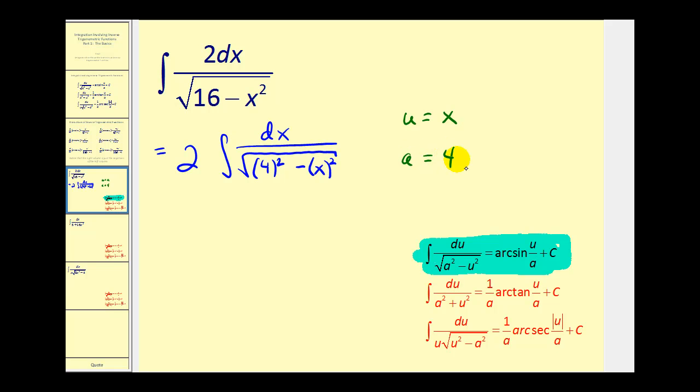Now the next thing we should recognize is that all these formulas are in terms of u. So it's important that we find differential u to make sure we do not have to perform a substitution. In this case, du would be equal to one dx or just dx. So no substitution is required. So now we can apply the formula. So the antiderivative would be two times arcsine u over a. Well, u is x and a is four, plus c.